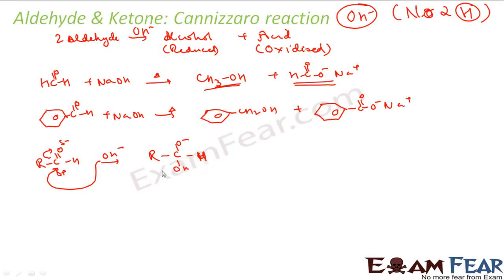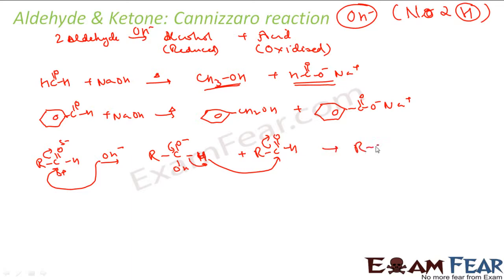This intermediate reacts with another RCHO molecule. The oxygen has a negative charge, so the H goes off as H⁻, forming a double bond. The electrons shift in this direction, this bond breaks, and the H⁻ attacks the carbonyl carbon of the second aldehyde. You get R-COO⁻ and R-C-O⁻.